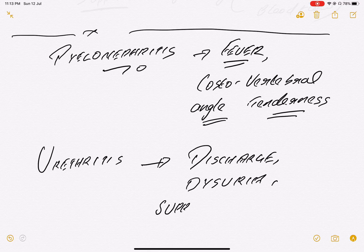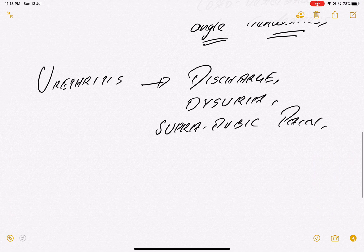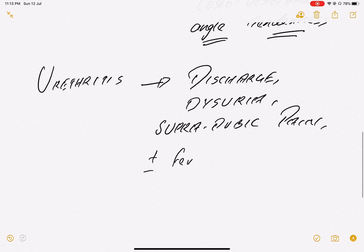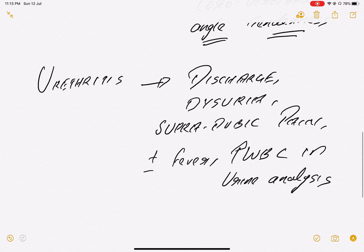Suprapubic pain, above the pubis pain, suprapubic pain. And there can be fever or absence of fever, presence or absence of fever. And remember WBCs, a lot of WBCs in urine analysis. So these are the features or characteristics for urethritis.